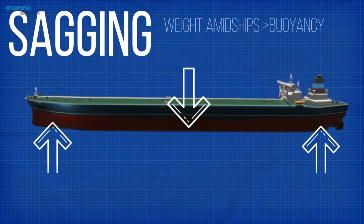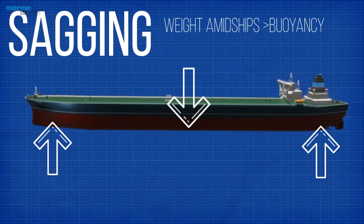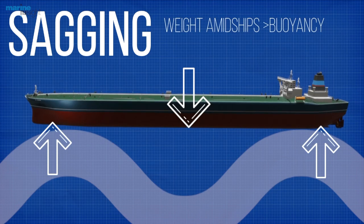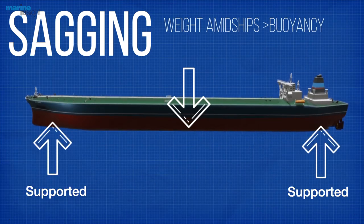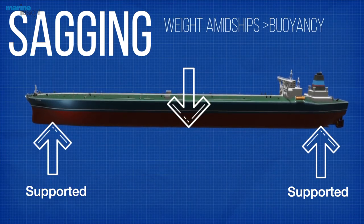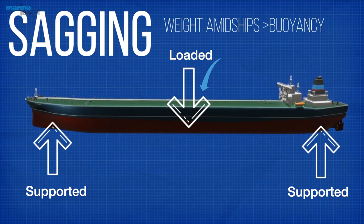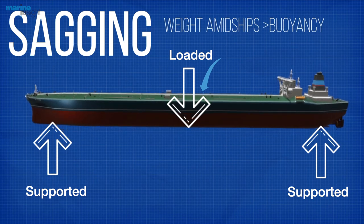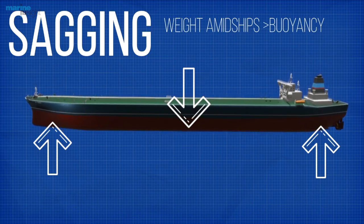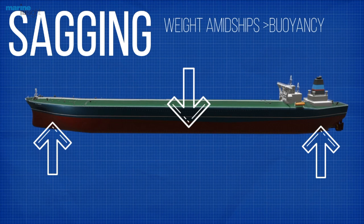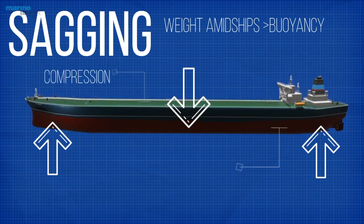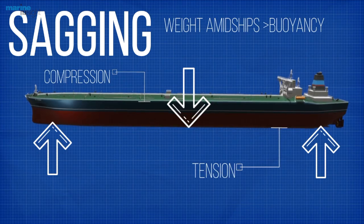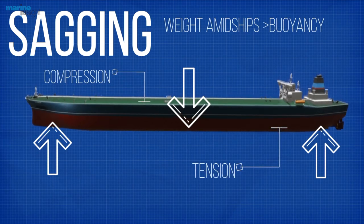If the weight amidships exceeds the buoyancy, or when the wave trough is at midships, the vessel will sag as a beam supported at an end and loaded at mid length. It is fairly evident that this longitudinal bending condition creates significant stresses in the structure, termed bending stresses.